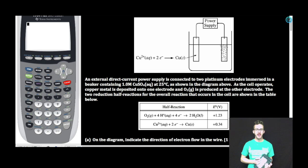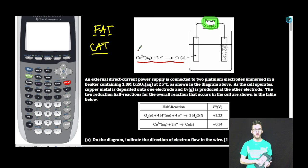Part A. On the diagram, indicate the direction of electron flow in the wire. As we think about answering this question, remember fat cat. Even though this is an electrolytic cell, and I know that because we have a power supply, energy is required, electrons are still going to flow from the anode to the cathode. As I look at my image and try to decide which of these is the anode and which is the cathode, recognize that we're provided with the half reaction that occurs at this platinum electrode here. It is the reduction of copper ion to solid copper.